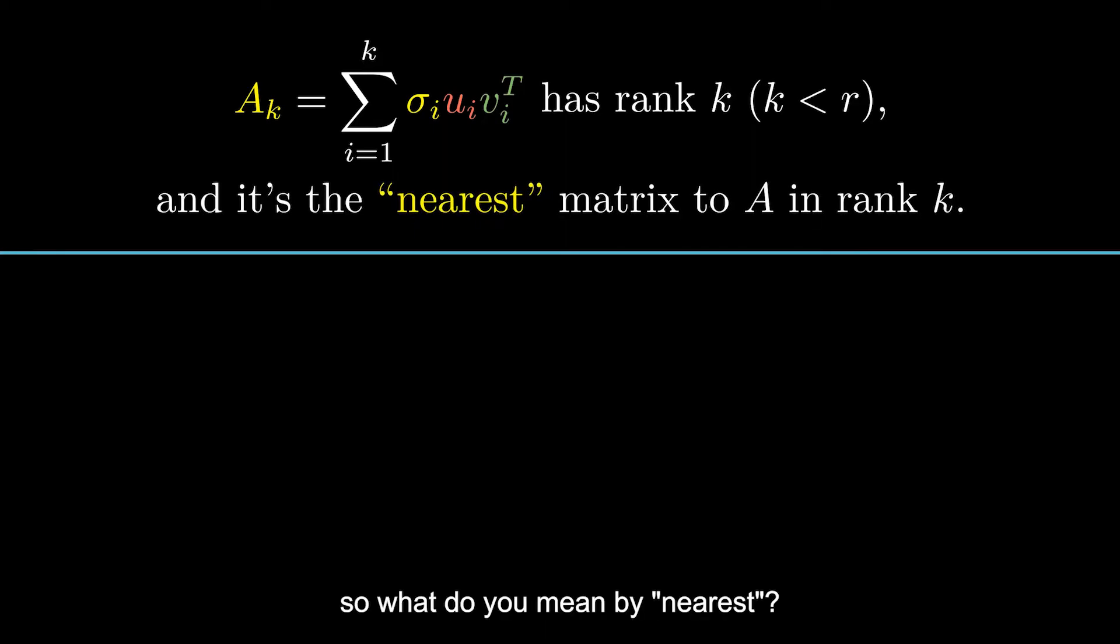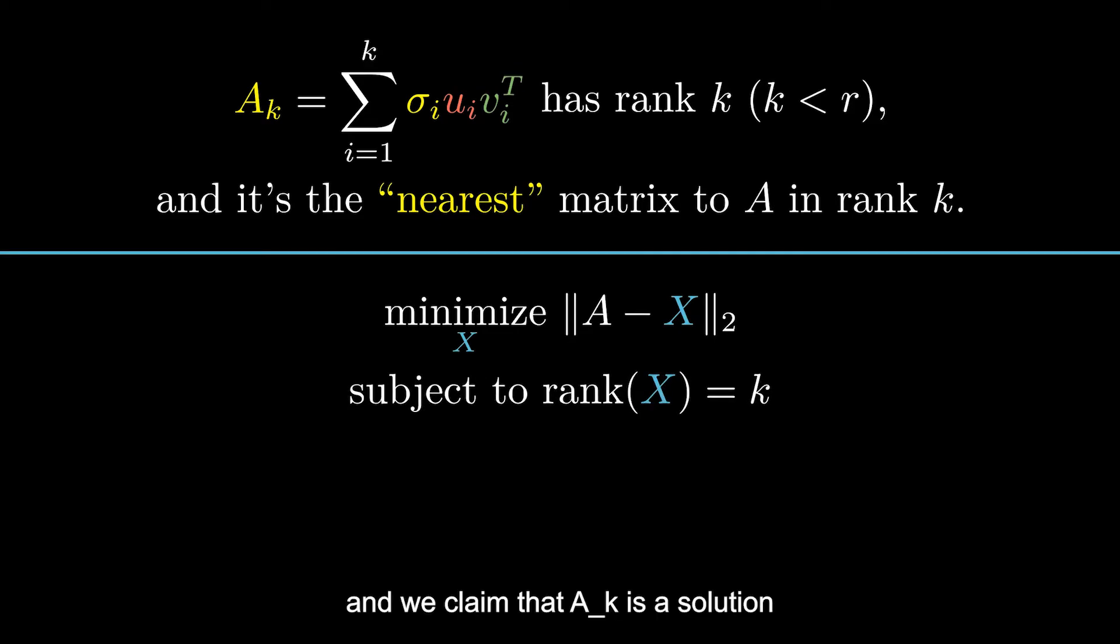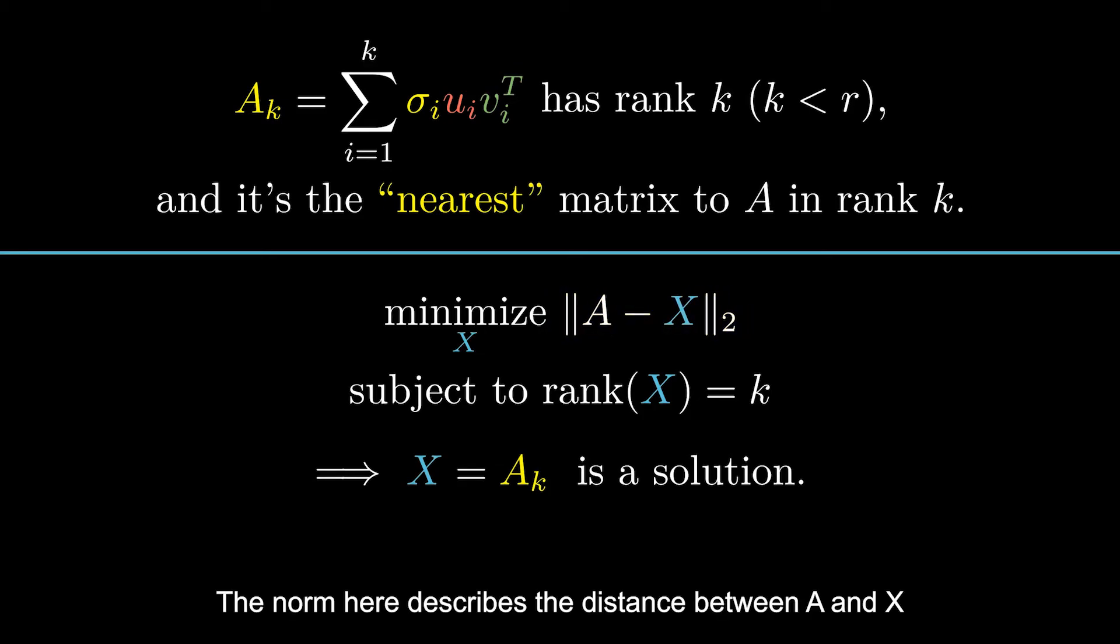So, what do you mean by nearest? Well, formally, it should be worded as norm minimization. And we claim that A_k is a solution. The norm here describes the distance between A and X, and it can be also Frobenius norm in this case.